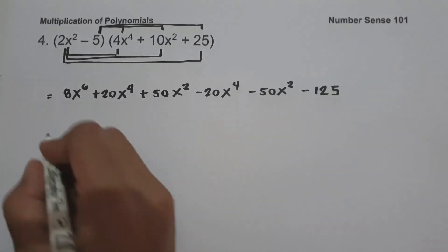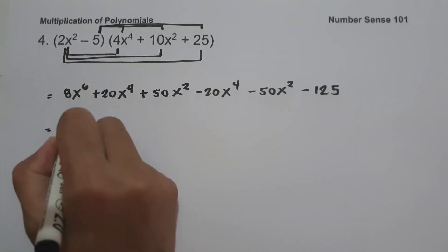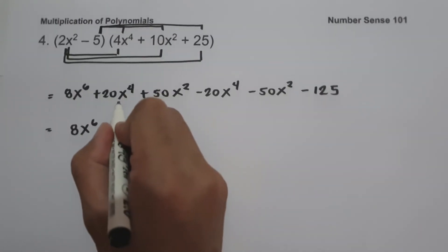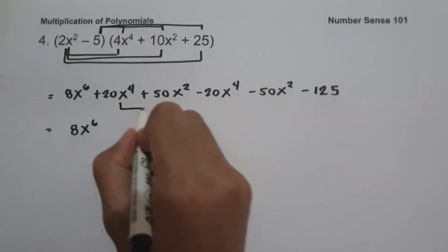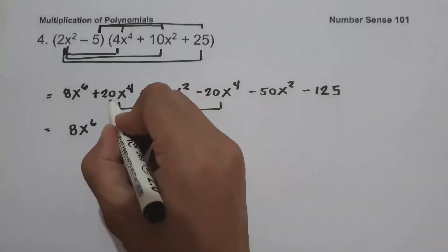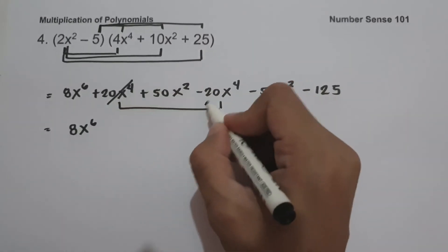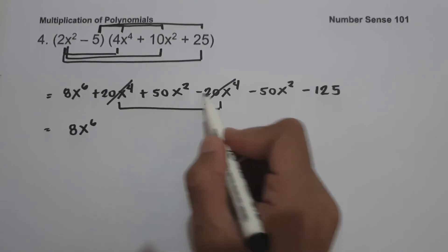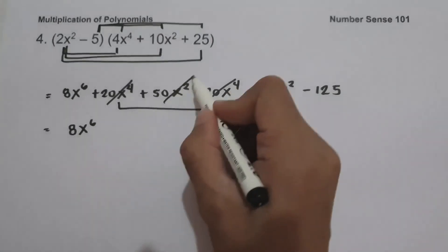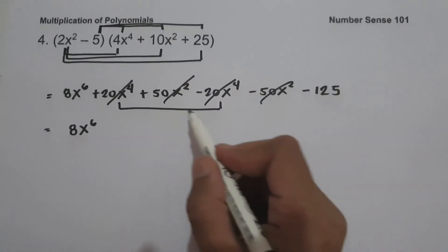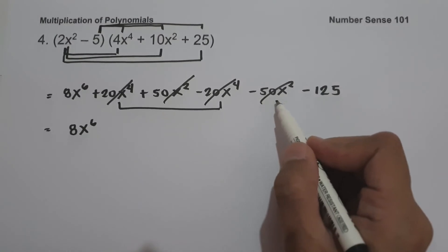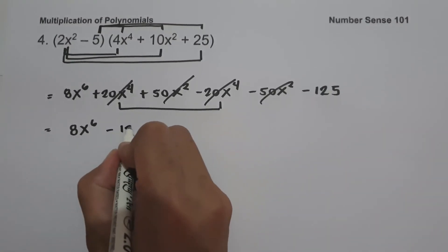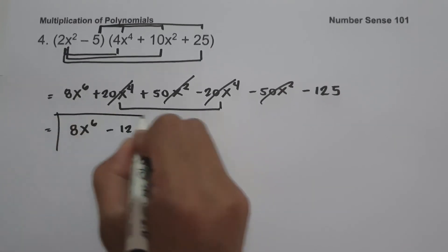So let us combine: 8x raised to 6, then 20x raised to 4 minus 20x raised to 4 — we cancel those. Then 50x squared minus 50x squared is 0, so we cancel those as well. And we have negative 125. This will be our answer.